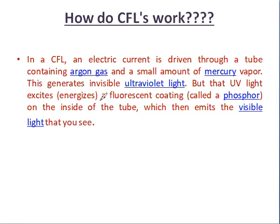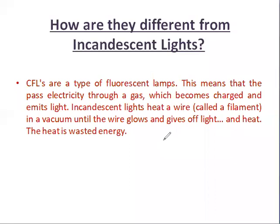When the ultraviolet light emits through the phosphor coating, we see the visible light. So first it generates ultraviolet light, and after passing through the phosphor coating it becomes visible light. CFLs are a type of fluorescent lamp — they pass electricity through a gas which becomes charged and ionized.